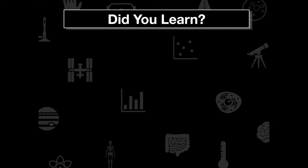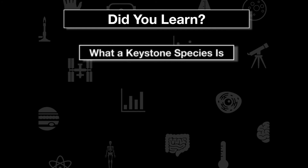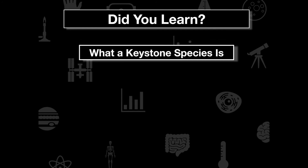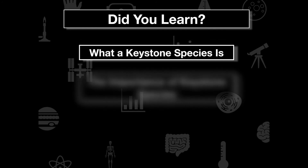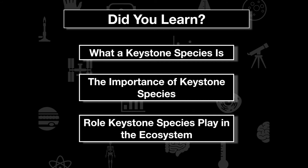This is the end of the video — just a quick overview on keystone species. We should take away three things: what a keystone species is, the importance of keystone species in ecosystems, and the role they play — including what would happen if their population is removed or declines significantly.